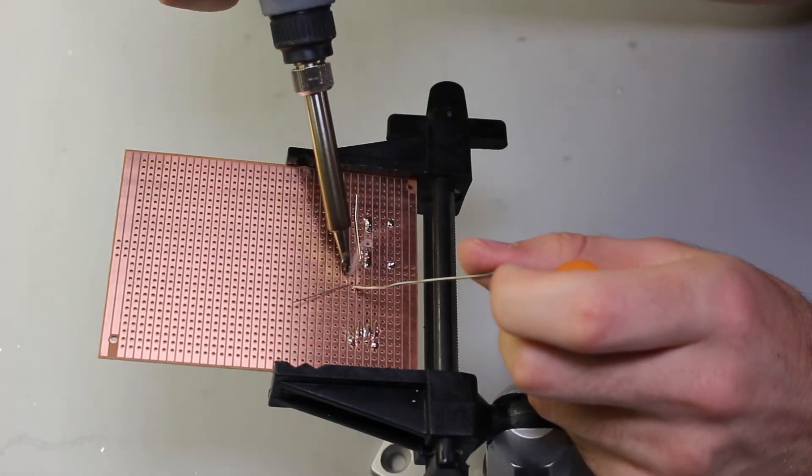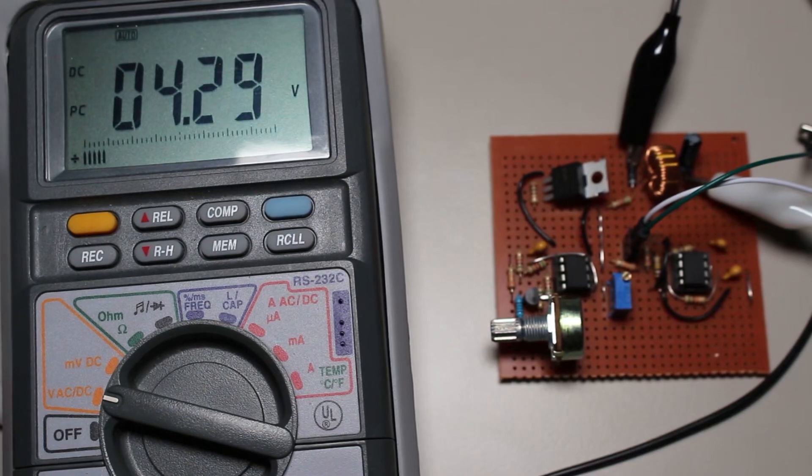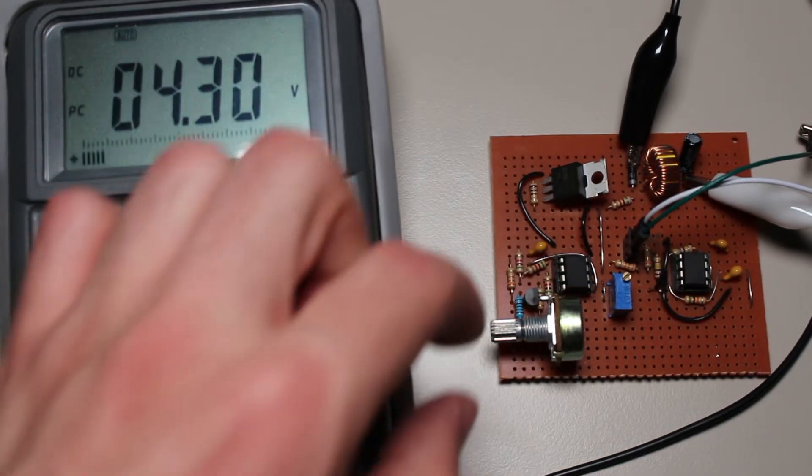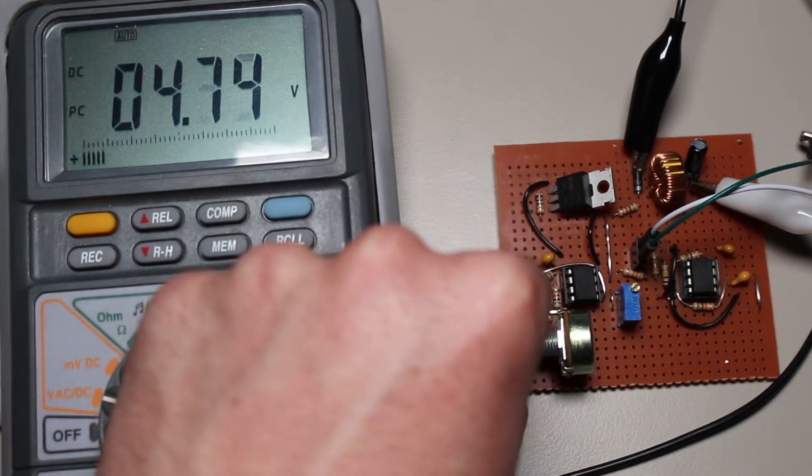And as we can see, the converter can regulate from 16 volts all the way down to 5 volts from the 16.4 volt input. So should you take the time to make your own buck converter?